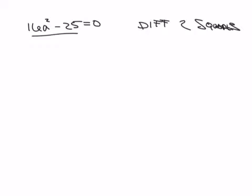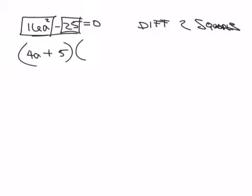16a squared minus 25 equals zero. Two terms there. That is the difference of two squares. So if you remember from some of the other sections and from your notes, you should already have this. What two numbers multiplied together give me that? Plus, minus, and we're done. But we have an equal zero.